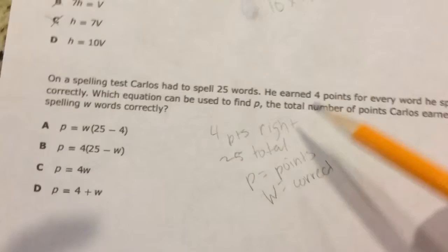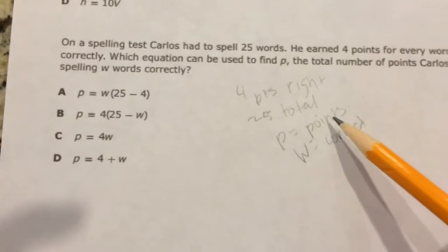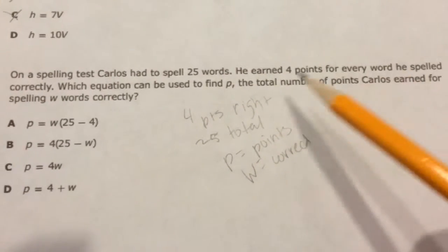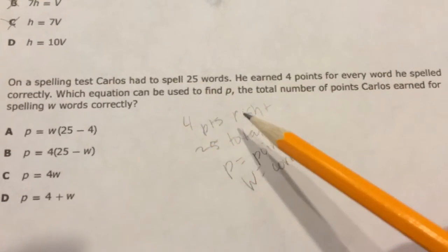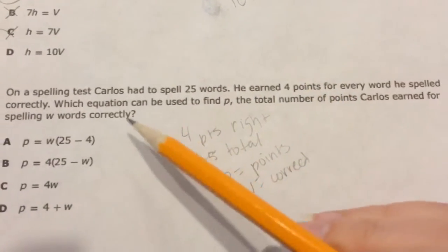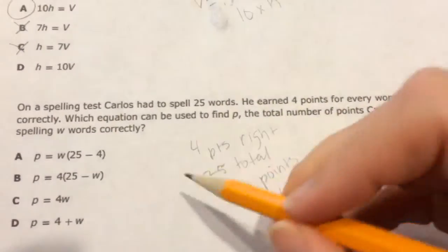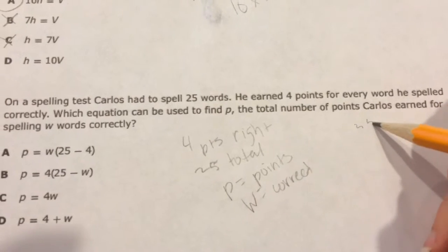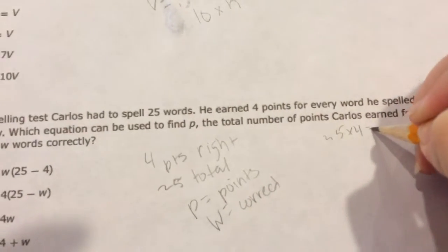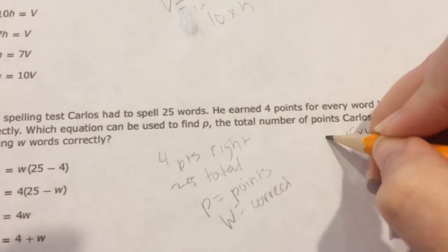Alright, so let's think about this. Carlos had to spell 25 words. He earned 100 points for every word correctly. Well, if we had 25 words and 4 points each for which ones he spelled correctly, I could figure out that 25 times 4 equals a total 100 points.